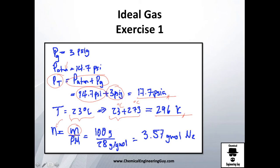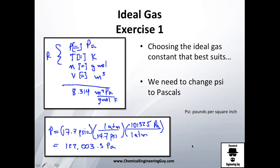Last but not least, we want the amount of moles, but we have mass. So let's convert: divide the 100 grams by 28 grams per gram-mole of nitrogen, and you will get the amount of moles for that quantity.